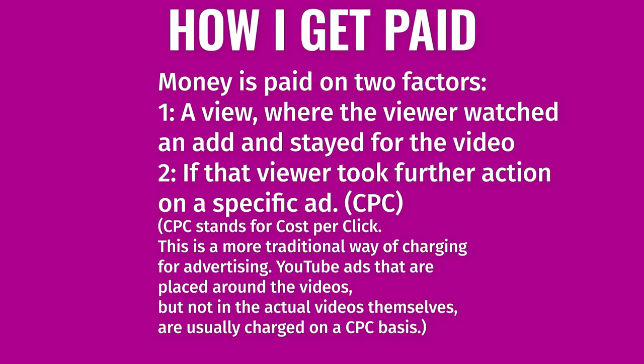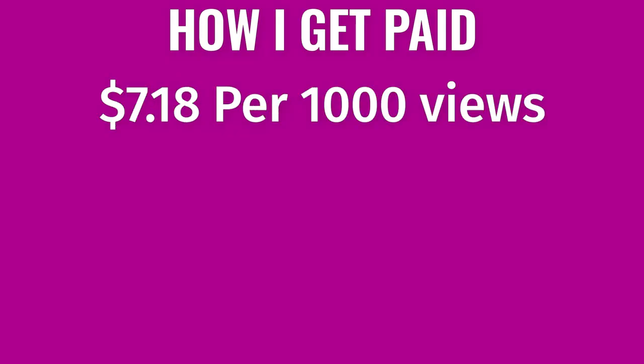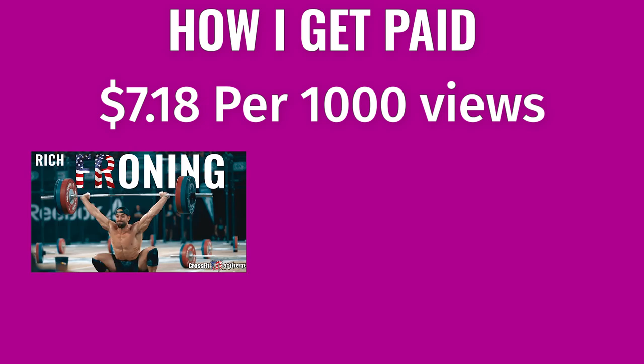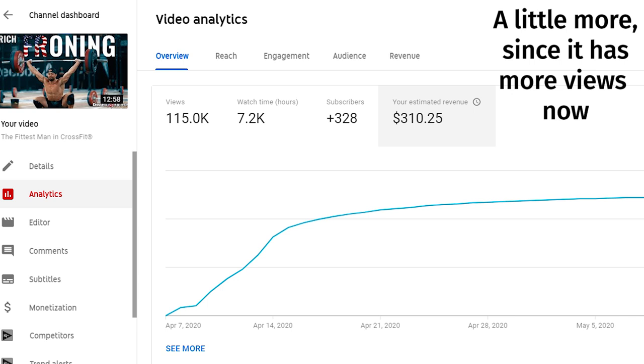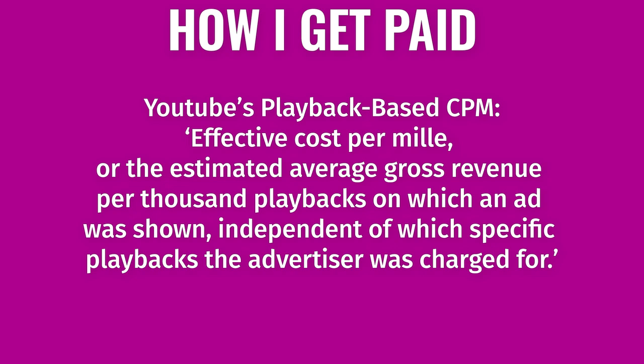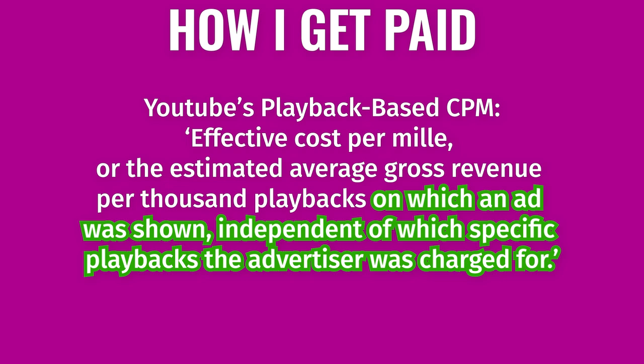Money is paid based on two factors: one, a view; and two, if the viewer takes further action on the ad — clicking on it, buying the product, etc. So if I make $7.18 per thousand views, on my Rich Froning fittest-on-earth video I would have technically made $804.16. But currently that video has only earned $306 — I'm about $498 short. Did I get ripped off? No. Remember, it's the estimated average gross revenue per thousand playbacks on which an ad was shown. Some of you blatantly skipped the ad, or didn't click on it, so I didn't get paid as much — or at all.